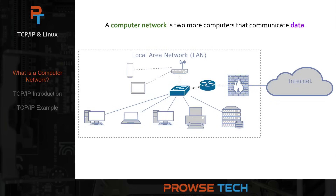Take a look at this network diagram. I use the term computers loosely — it could be any system or device that has an IP address and can communicate on the network, any host. As you can see in the figure, we have lots of different computer systems: PCs, laptops, mobile devices. We have a switch that connects everything together, a wireless access point for our mobile devices, a router or gateway device, a firewall, and then that connects out to the internet.